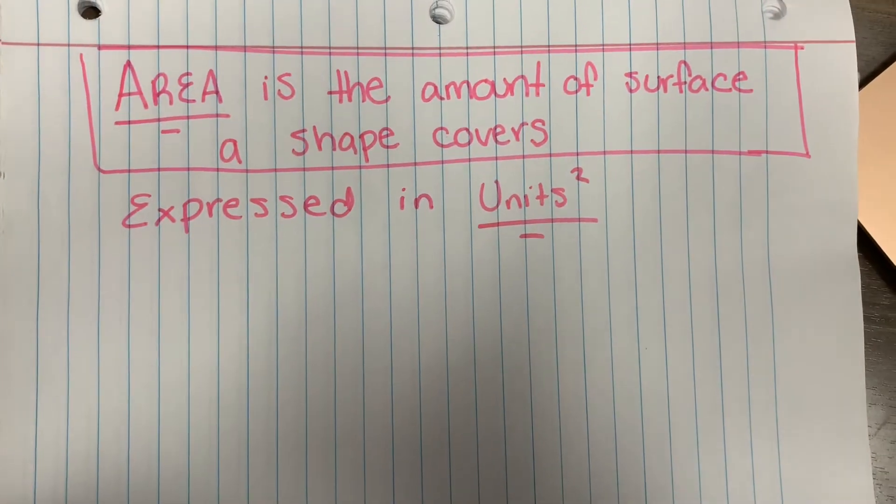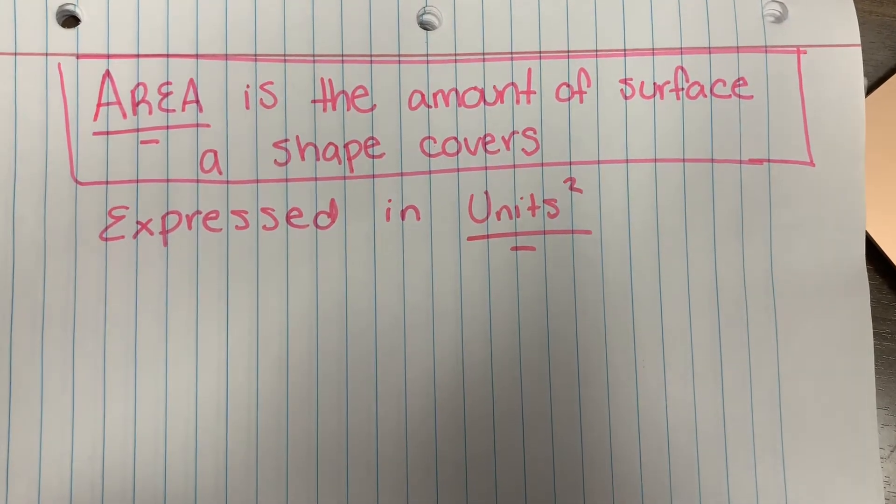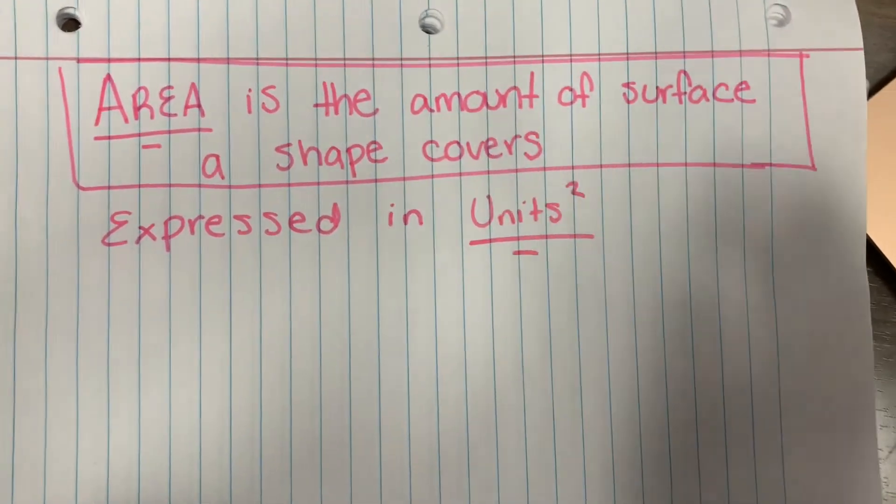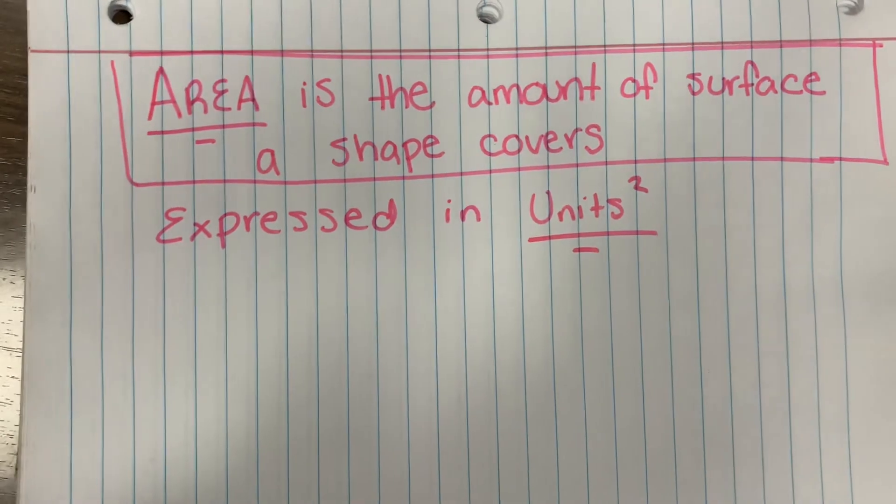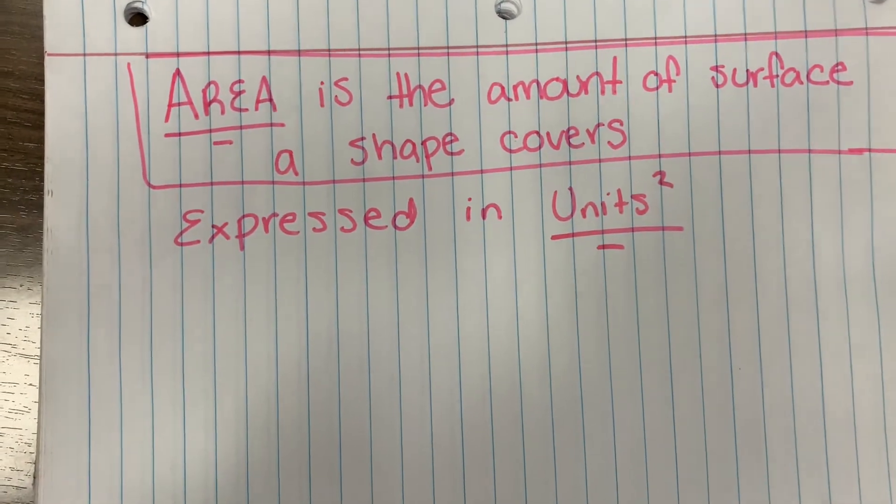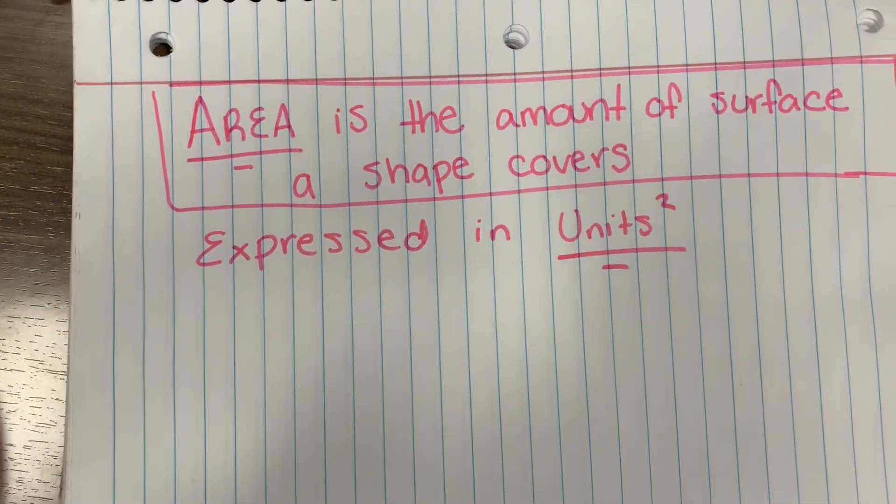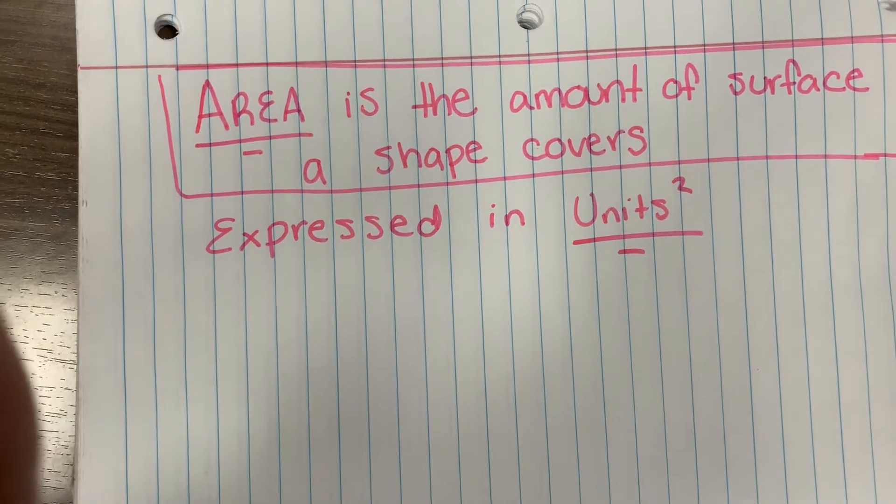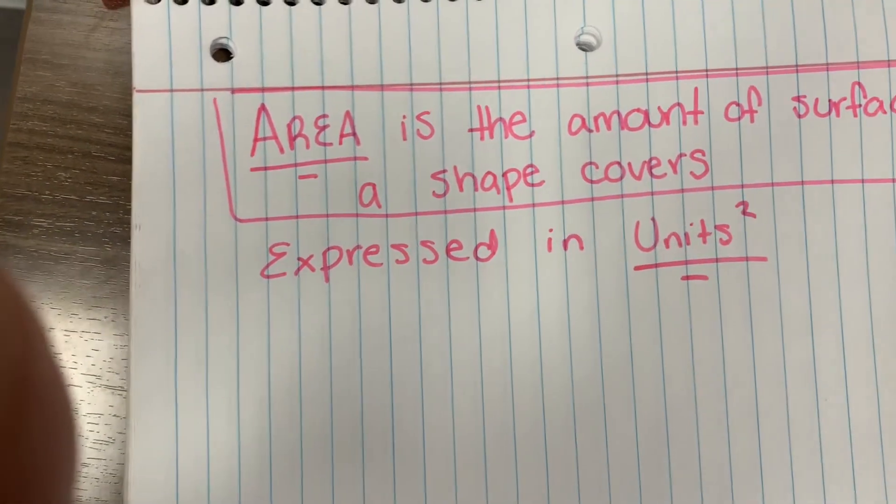The first thing to keep in mind is what is area. Area is the amount of surface a shape covers, and it's always expressed in units squared. Whether it's inches, meters, whatever it is, the answer is always going to be squared.